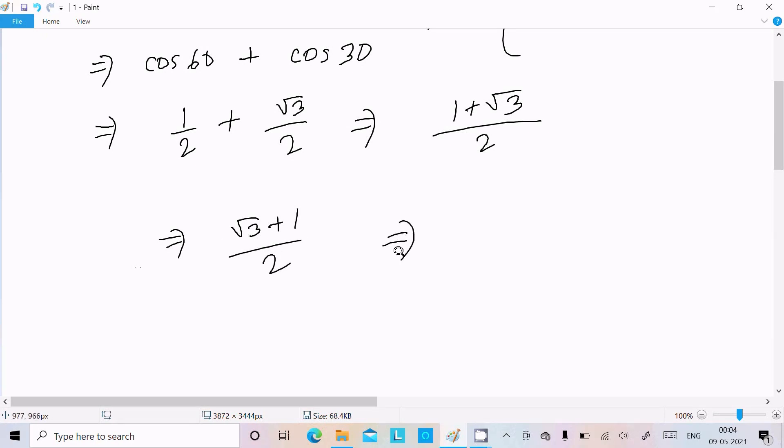So here we can write LHS equals RHS equals root 3 plus 1 by 2. It's proved.